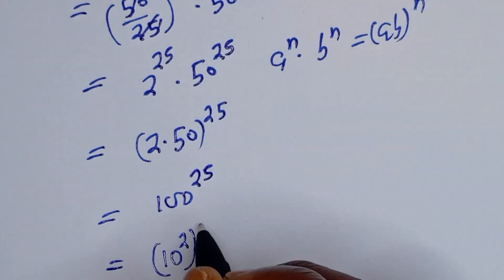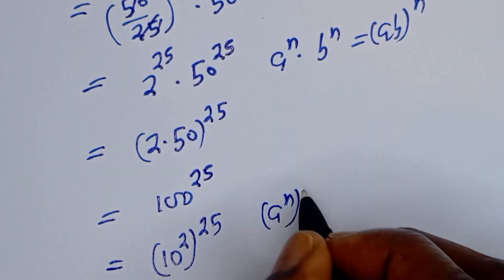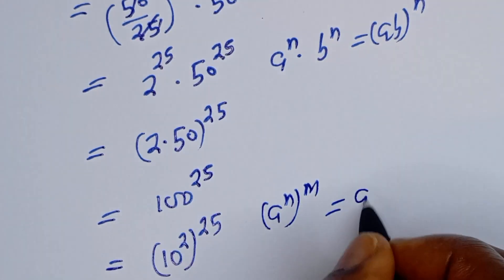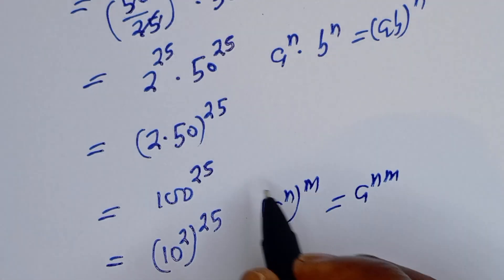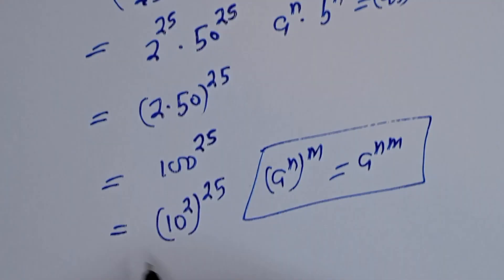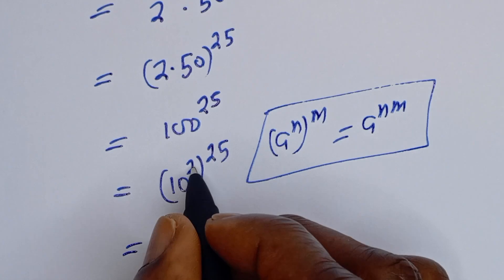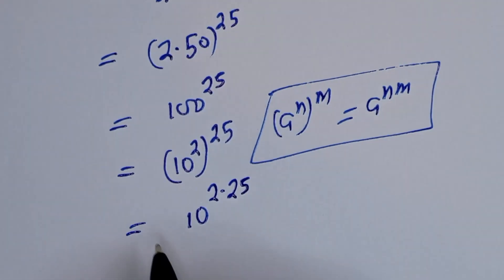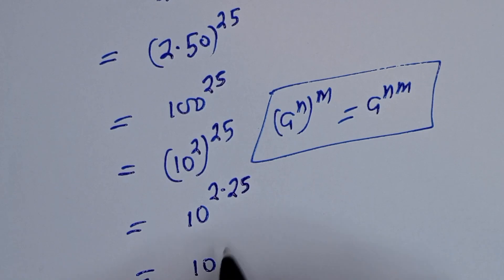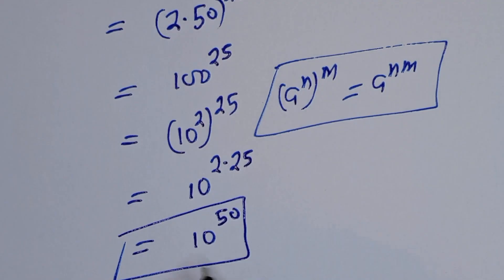But 100 can be written as 10 squared, to the power of 25. If you have a to the power of n, to the power of m, this is equal to a to the power of n times m. So here we have 10 to the power of 2 multiplied by 25, which is equal to 10 to the power of 50. And this is the final answer!